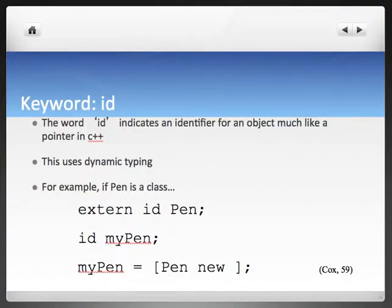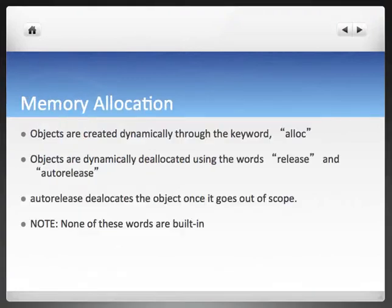We have a good way to implement dynamic typing is to use generic identifiers like this type ID. IDs work like pointers to objects, which if you're in language C or C++, you're going to see these are objects. It's a good example of how IDs work as written by Cox in his book. This uses an object much like a pointer in C++. This uses dynamic typing. For example, if pen is a class, external ID pen, then my pen equals new pen. We're probably saying, I'm completely lost. That's okay. We're going to sum this up real quick.